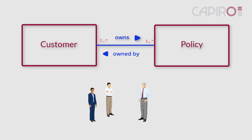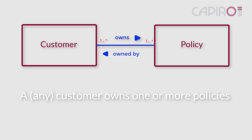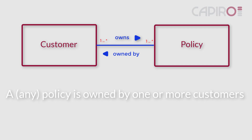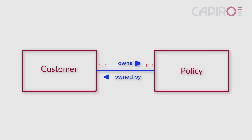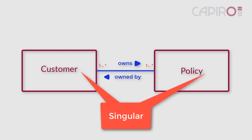To summarize: a customer — i.e., any customer — owns one or more policies, and a policy can be owned by one or more customers. Note that although we say 'policies' and 'customers,' the words 'policy' and 'customer' on the model are written in the singular — i.e., 'policy,' not 'policies,' and 'customer,' not 'customers.'